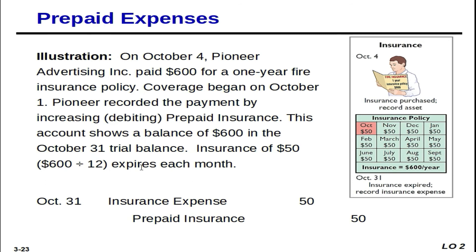The original journal entry was debit Prepaid Insurance, credit Cash — $600. Now for the adjusting entry: whatever you debited in the original for prepaid expenses will be credited in the adjusting entry. We debited Prepaid Insurance originally, so now we credit it by $50 to reflect the one month used. We debit Insurance Expense $50 — transferring it from an asset to what it really is: an expense.